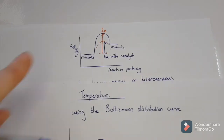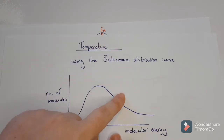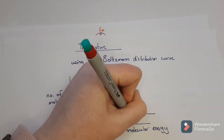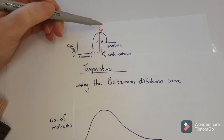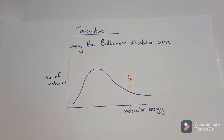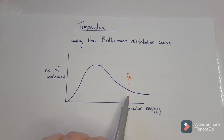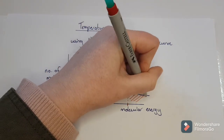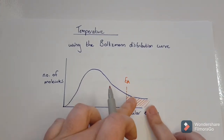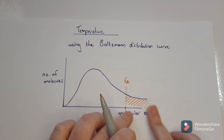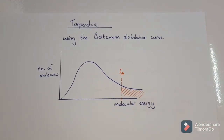Remember, there is an activation energy. On the Boltzmann curve's x-axis, I can plot a specific energy value as my activation energy. Any molecule that has energy higher than the activation energy will react — those are all the molecules that will react because they have energy higher than the activation energy. That's how we read a Boltzmann distribution curve.